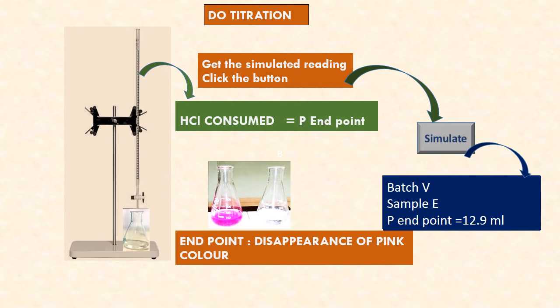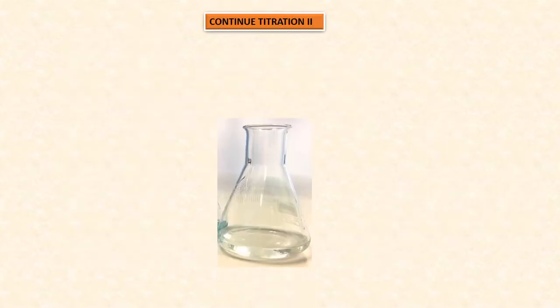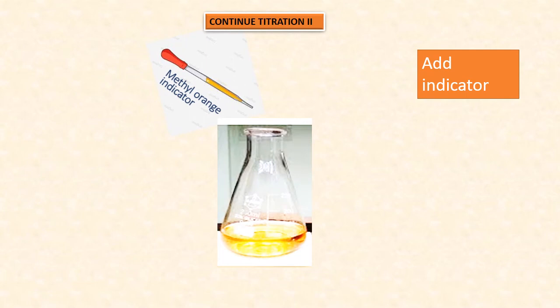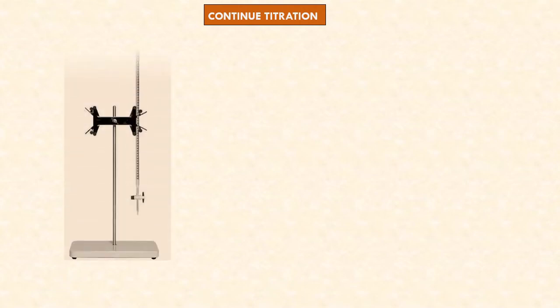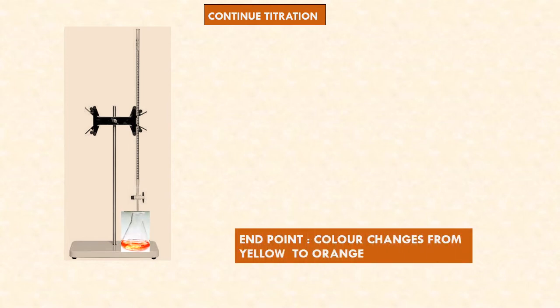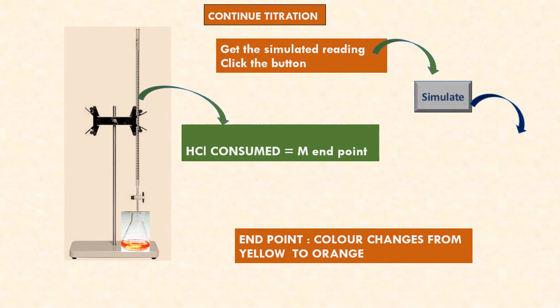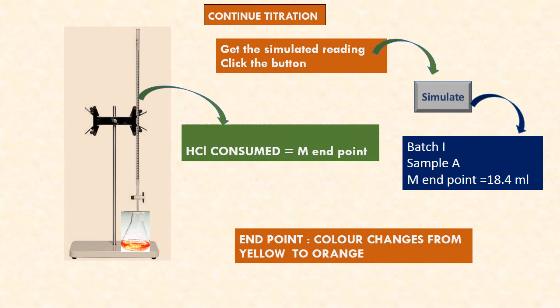Now, for all five samples, we continue the titration by adding methyl orange indicator to the same solution. Upon adding methyl orange indicator, the solution turns yellow. Continue titrating with HCl solution — the yellow color turns orange; that is the endpoint. Note down HCl consumed as M (methyl orange endpoint). Batch one, sample A: methyl orange endpoint is 18.4 ml.